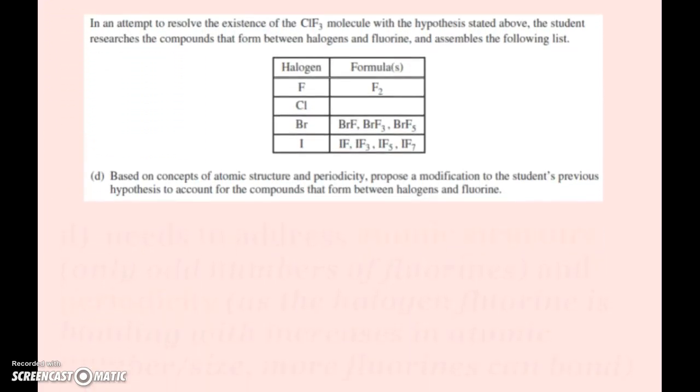In an attempt to resolve the existence of CLF3 with the above hypothesis, the student researches compounds and assembles this list. Based on atomic structure and periodicity, propose a modification to the hypothesis. Atomic structure, what they're looking for here is what is the structure of these molecules? The thing that pops to me is that we only have an odd number of fluorines. This says F2, but technically it's fluorine attached to one other fluorine.